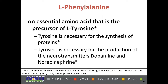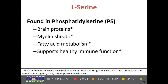L-phenylalanine is an essential amino acid that is a precursor to L-tyrosine. Tyrosine is necessary for the synthesis of proteins and also for production of dopamine and norepinephrine, which are very important neurotransmitters. L-serine is an important part of brain proteins, helps in construction of the myelin sheath that surrounds our nerves, aids in fatty acid metabolism, and can support healthy immune function, among other things.